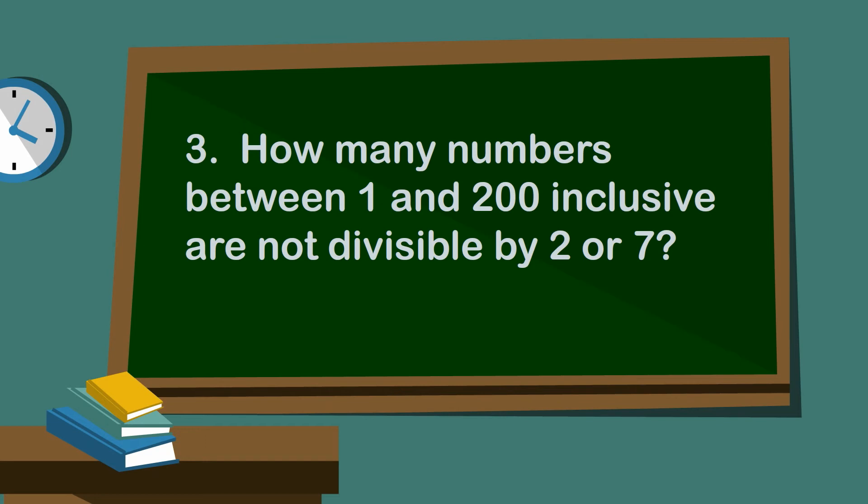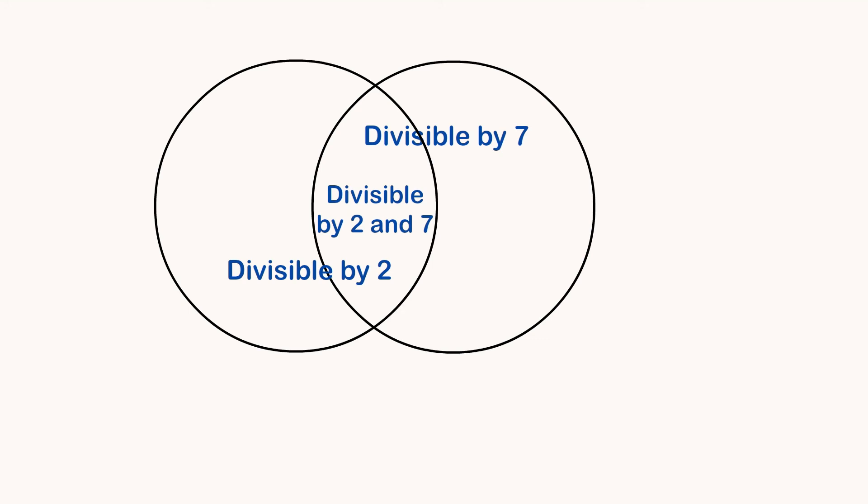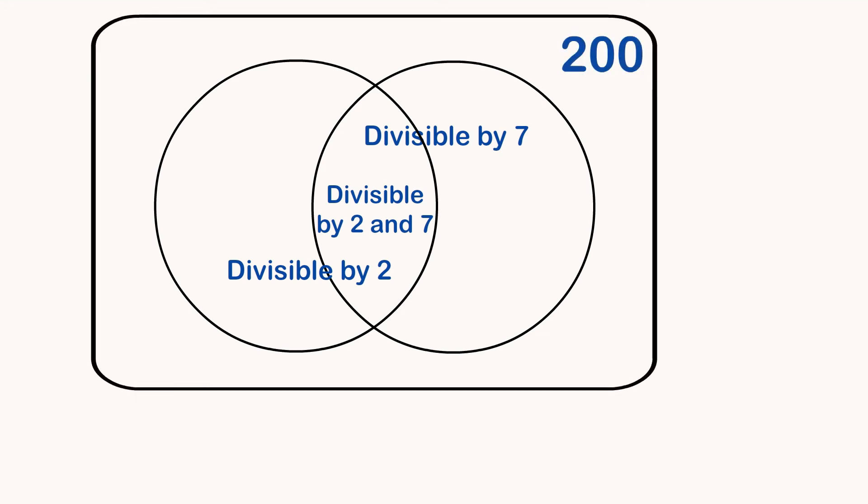This time we've got two sets, two big sets, so we can draw the Venn diagram. Here I'm going to put a rectangle around the two circles, and I'm going to label it 200. This is our universe of the first 200 numbers, and that's all that we are concerned about with this problem.